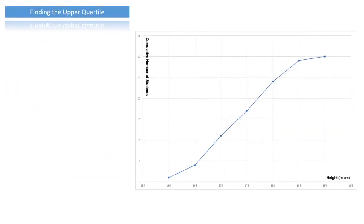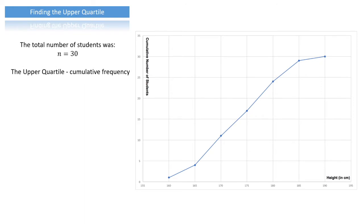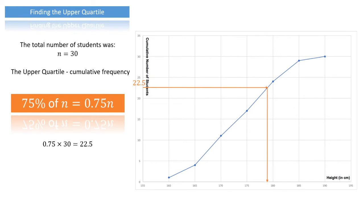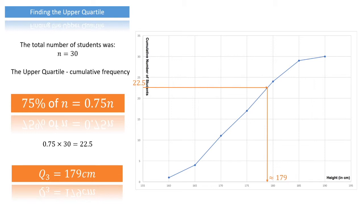To find the upper quartile we again note n equals 30. The upper quartile corresponds to a cumulative frequency of 75% of our total, so that's 0.75n. Since n equals 30, that's 0.75 times 30 which is 22.5, and we add that to our graph. We draw a horizontal line from the cumulative frequency axis up to the curve, then a vertical line down to the horizontal axis to read off the value. That is approximately 179, so the upper quartile Q3 equals 179 centimeters.